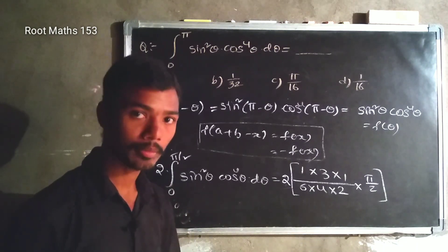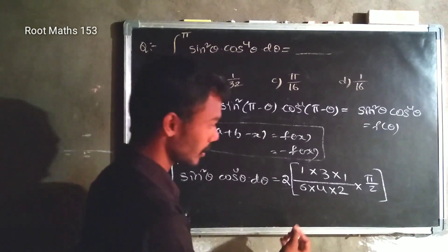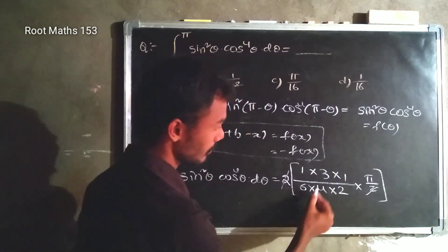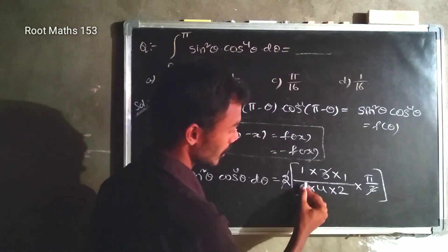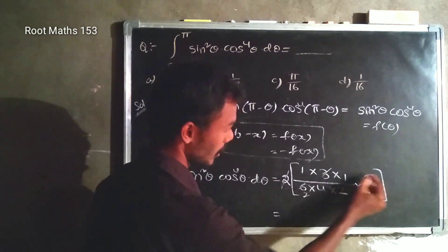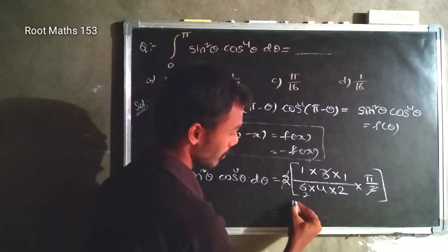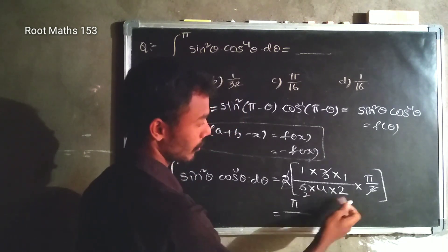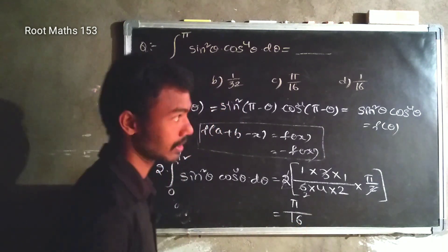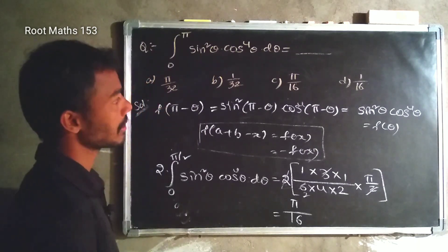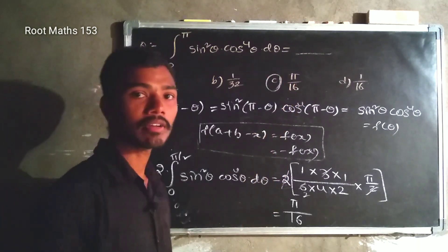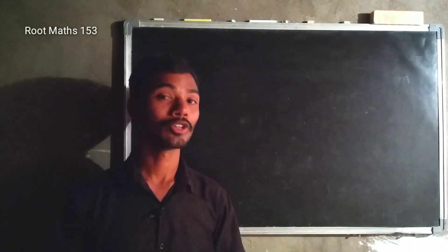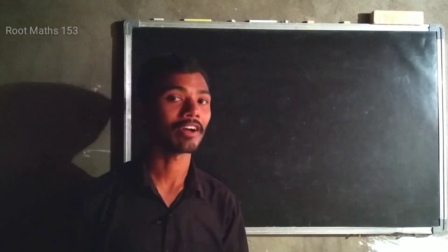So we apply 2 into the formula. The 2 cancels, and 3 is in the numerator. Denominator: 4 into 4 equals 16. So the final answer is pi by 16. Option C is our correct answer.